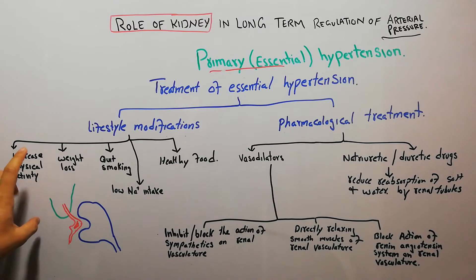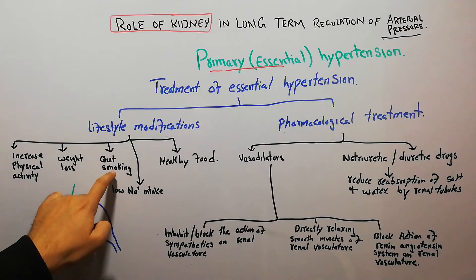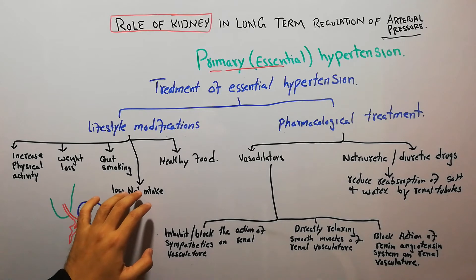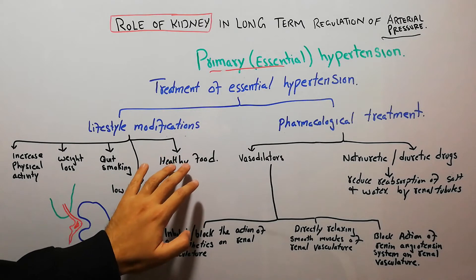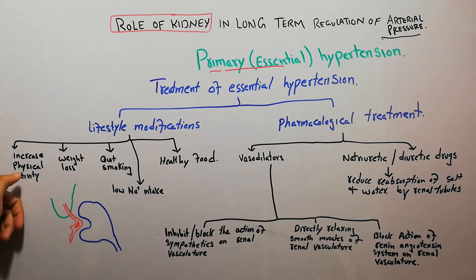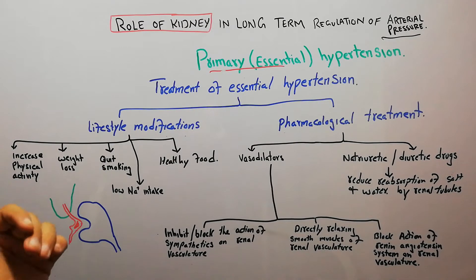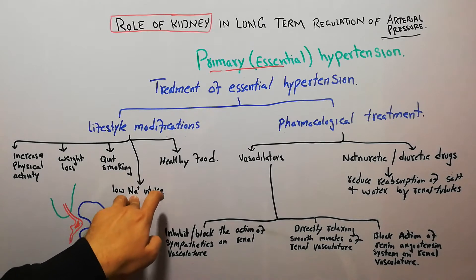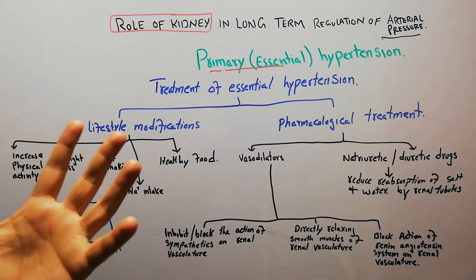Other lifestyle modification options include weight loss, quitting smoking and alcohol, decreasing the intake of salt, and increasing the intake of healthy foods. Due to decreased activity, weight gain, alcohol, smoking, and increased intake of salt and junk food, body weight increases.